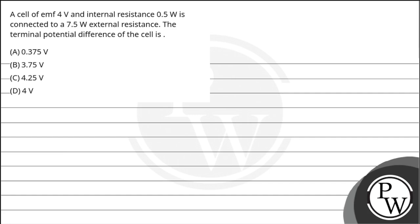Hello. Let us read the question. A cell of emf 4 volts and internal resistance 0.5 ohms is connected to a 7.5 ohms external resistance. The terminal potential difference of the cell is: Option A is 0.375 volts.